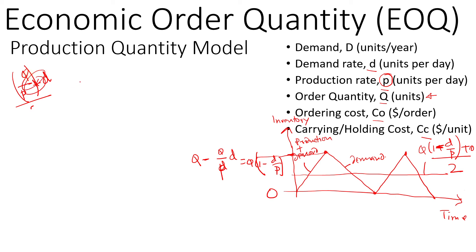I can write this as Q(1 minus d by p) divided by 2. If this is the average number of inventory we're holding and the holding cost per unit is Cc, then this is basically the total holding cost or carrying cost.